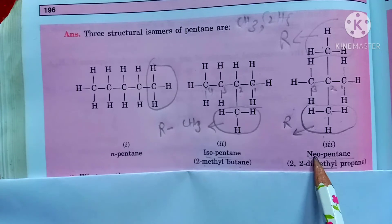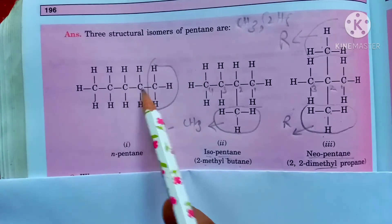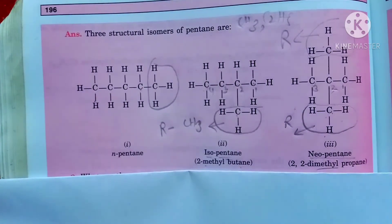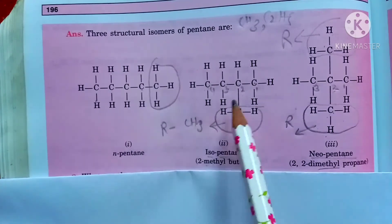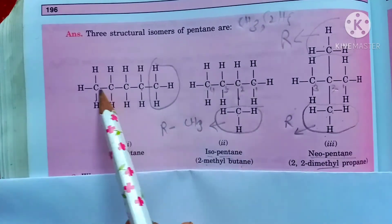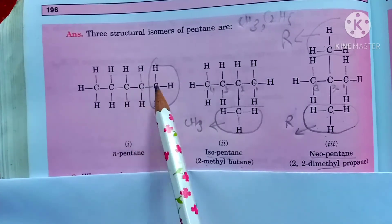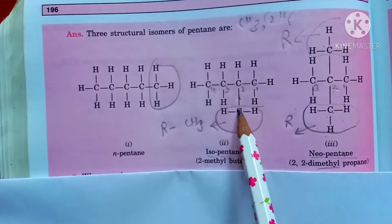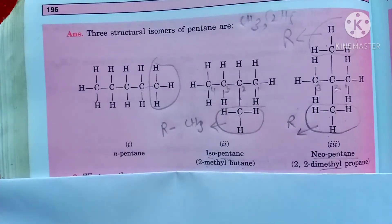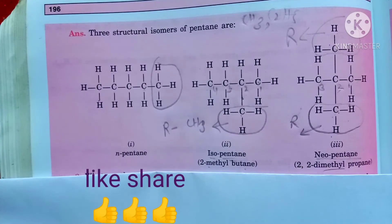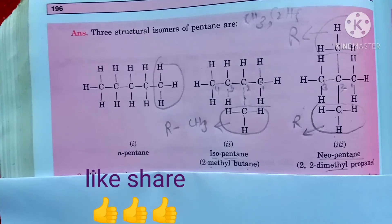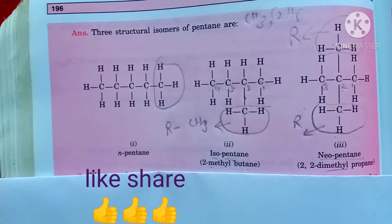So these three structural isomers of pentane have the same molecular formula C5H12, but different structural formulas. The number of carbon atoms — one, two, three, four, five — and the number of hydrogen atoms are the same, but the structures are different. I hope this video will be useful for you.